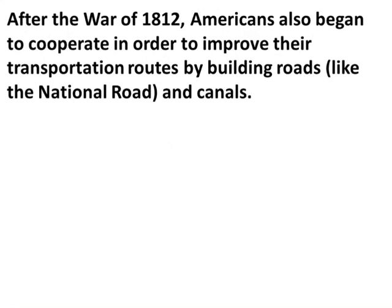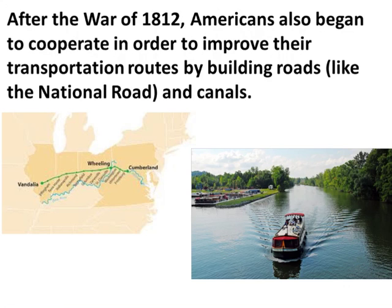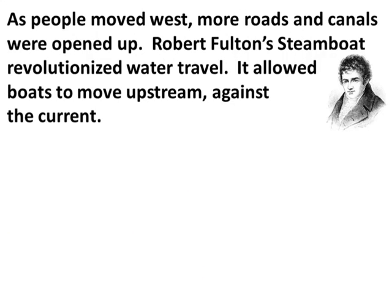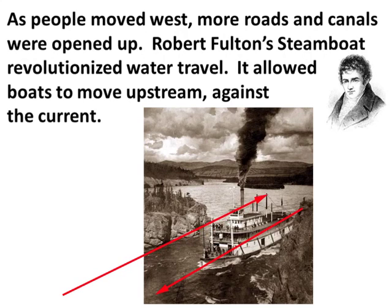After the War of 1812, Americans began cooperating to improve transportation routes by building roads like the National Road and canals, which are man-made waterways. As people moved west, more roads and canals were opened up. Robert Fulton's steamboat revolutionized water travel — it allowed boats to move upstream against the current, so not only could boats go downstream but they could turn around and travel upstream almost as fast.